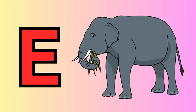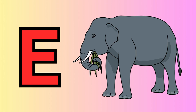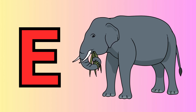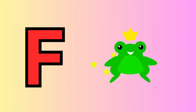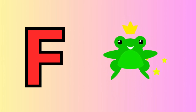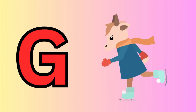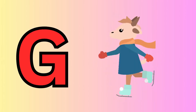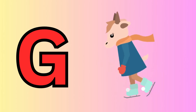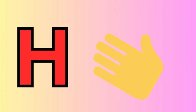E is for elephant, e-e-elephant. F is for frog, f-f-frog. G is for goat, g-g-goat. H is for hand, ha-ha-hand.